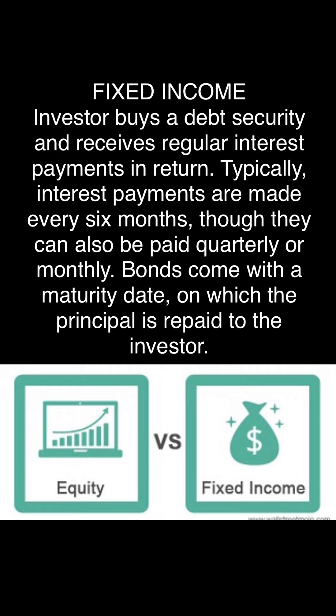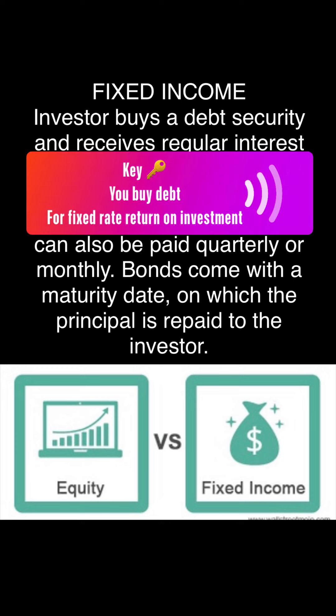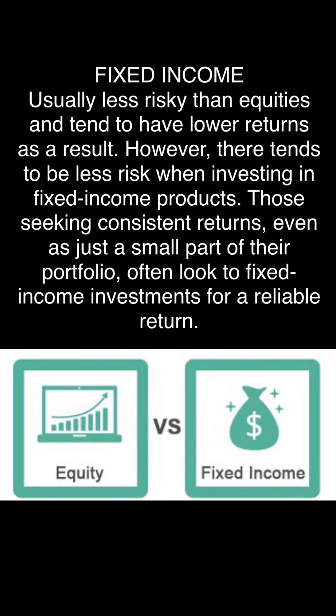In fixed income, the investor is buying debt — you are buying the debt of a security and receive regular interest payments in return. Typically, the interest payments are made every six months, though there are many different types of securities you can buy. You can get paid quarterly, monthly, or you can get certain ones that mature in specific years. Bonds come with maturity dates on which the principal is repaid to the investor. Fixed income investments are usually less risky than equities and tend to have lower return rates as a result.